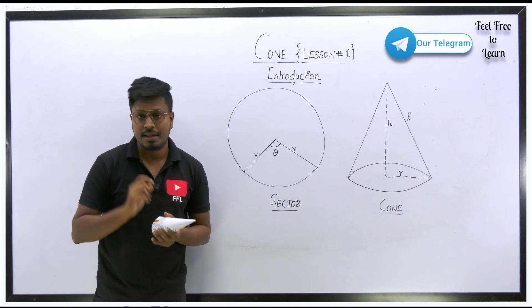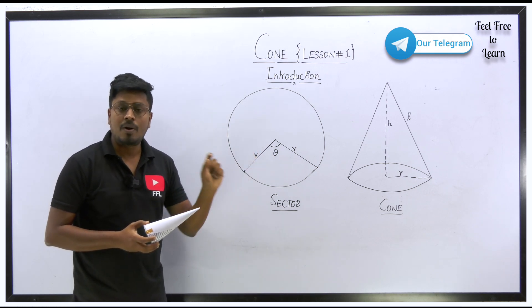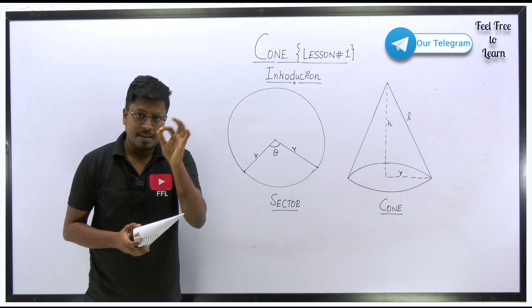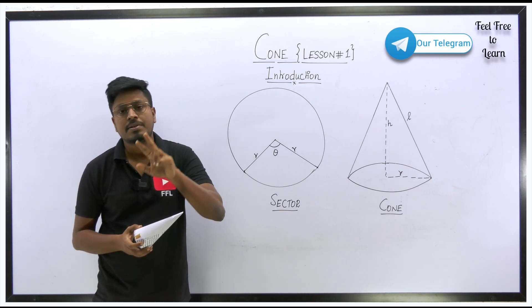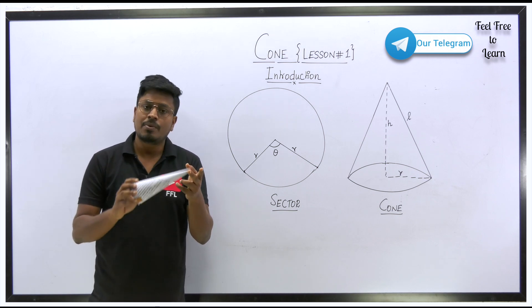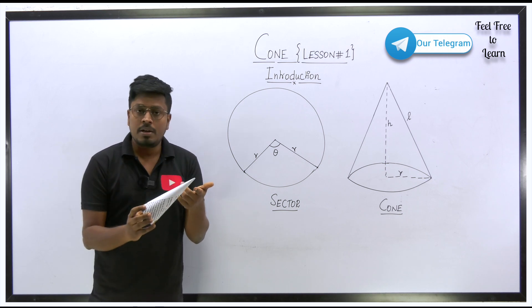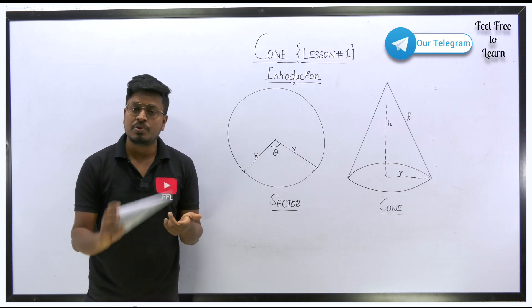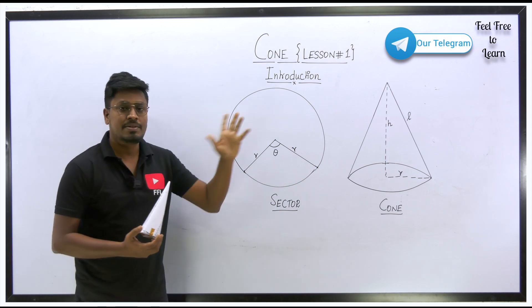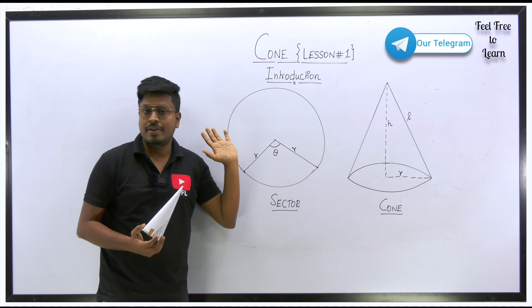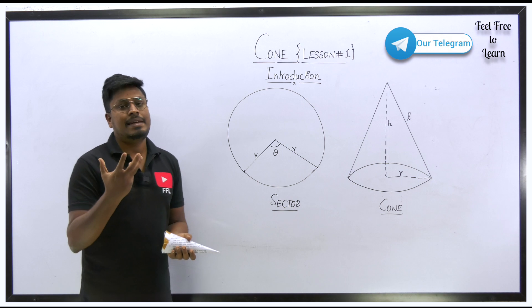These topics come under quantitative aptitude called measurement. Under measurement, we have two sessions: area and volume. In area, topics like square, rectangle, and circle have been completed. In volume, the first topic was cube and cuboid, and now we are entering the second topic — cone and cylinder. In this video we focus on the cone.